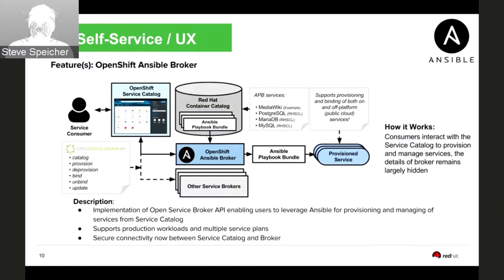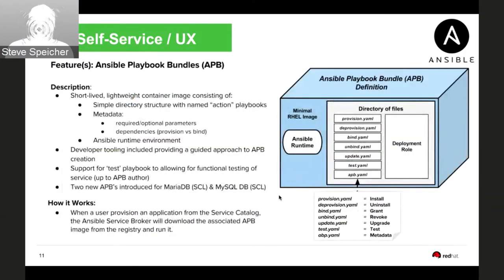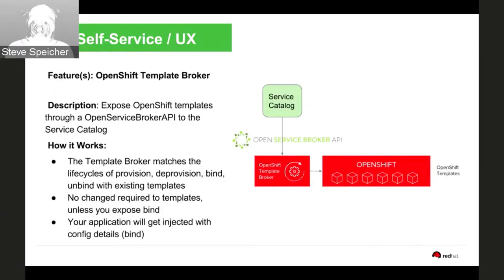The Ansible service broker pulls content from a catalog — an image that's basically a bundle somewhere — and can provision a set of services. That bundle looks like a runtime executing a standard set of verbs matching the Open Service Broker API actions: provision, deprovision, bind, etc. It also adds capabilities for additional validation such as testing. The template service broker gives you the flexibility to leverage the same interface and adds the capability to inject config through binding — the action to provision and then inject your application with the configuration of the service you're consuming.